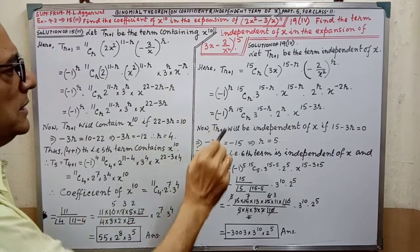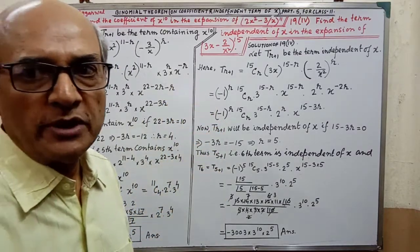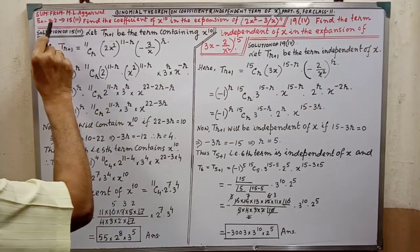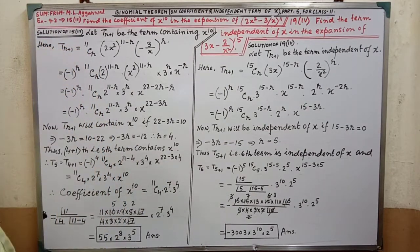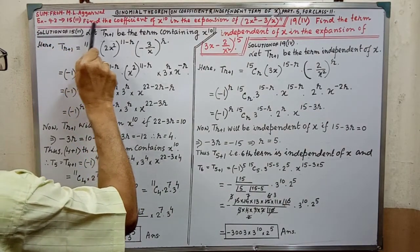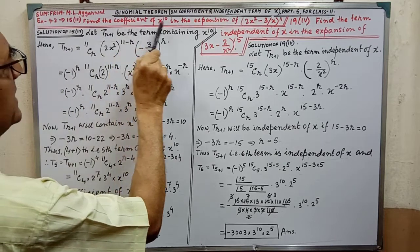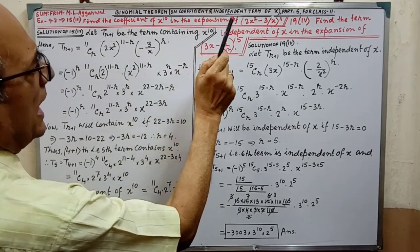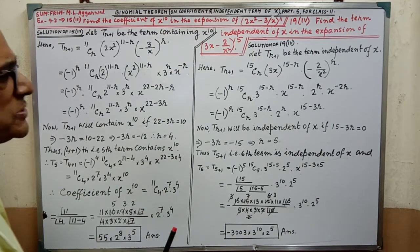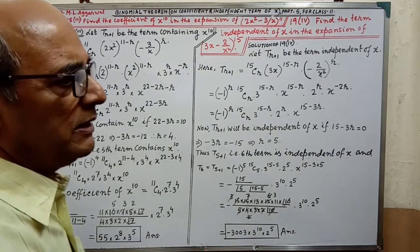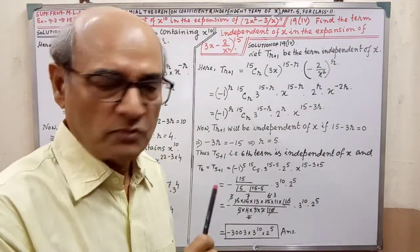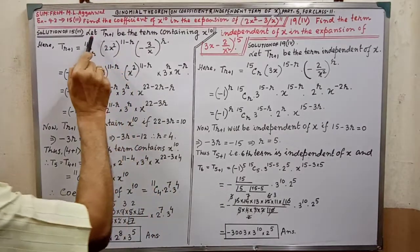Here you will get 2 solutions from M.L. Agarwal, that is Exercise 9.2, sum number 15, part 3. You will get this sum in the book. Before observing this, you must go through video 3 — there you will get the formula. Now see the solution.